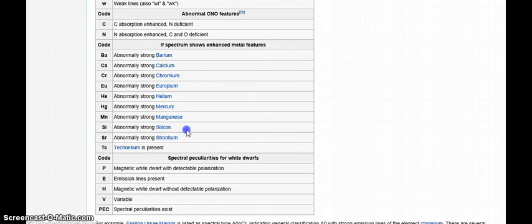For instance, abnormally strong silicon. The Earth's crust is made of a lot of silicon. What if the reason why the spectrum of a star shows enhanced metal features is because it's destroying an Earth and ripping away its crust, so all of its crust is inside that solar atmosphere, making abnormally strong silicon. Same with all these other elements.